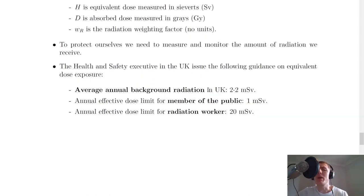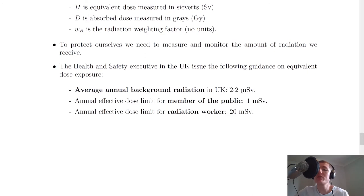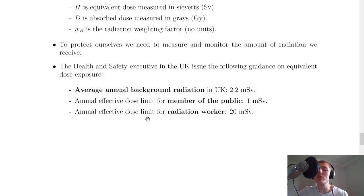As we've seen in previous videos such as when we were talking about film badges, to protect ourselves we need to measure and monitor the amount of radiation we receive, especially if you're working with radiation. The Health and Safety Executive in the UK issued the following guidance on equivalent dose exposure. The average annual background radiation in the UK is roughly 2.2 millisieverts. The annual effective dose limit for a member of the public is 1 millisievert. The annual effective dose limit for a radiation worker is 20 millisieverts — 20 times that of a member of the public.